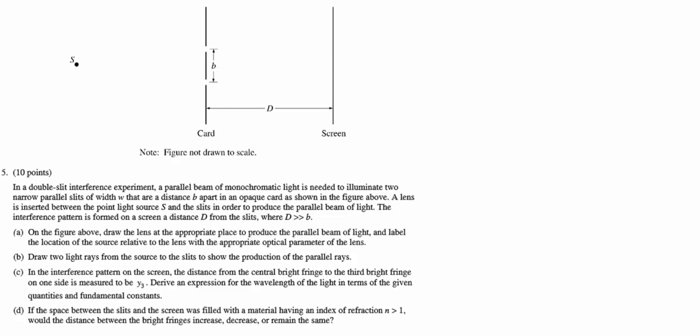Alright, this is number five from the 2010 Form B AP Physics B exam, and we're dealing with more or less an optics problem. We've got double slit interference taking place. We've got a parallel beam of light that is needed. We're going to have some geometry variables given. We have a lens that's going to be used to create the parallel rays, and we know that the distance is significantly farther away than the distance between the openings themselves.